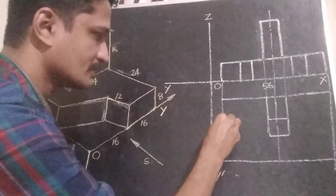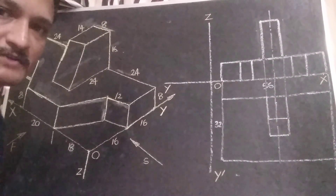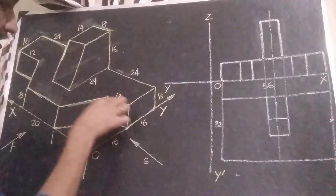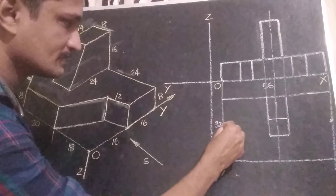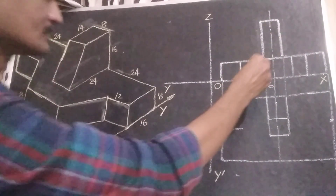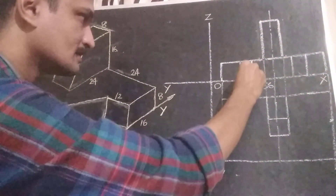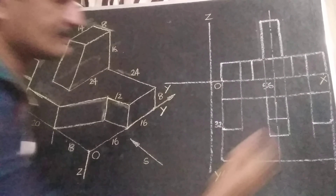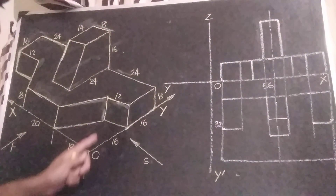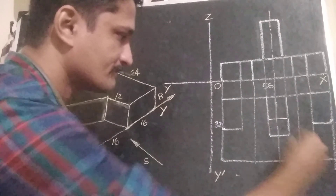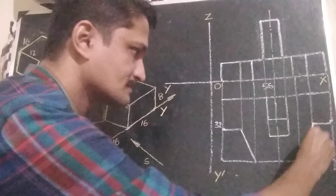Total width is equal to 32, and this total length is equal to 24 mm. Here 16 mm will be removed. This distance is 12 mm; here also this distance is equal to 16 mm, then 12 mm up to this point. We can connect this one and this one also.